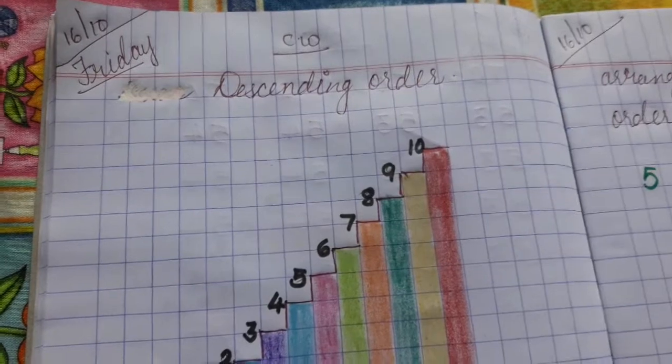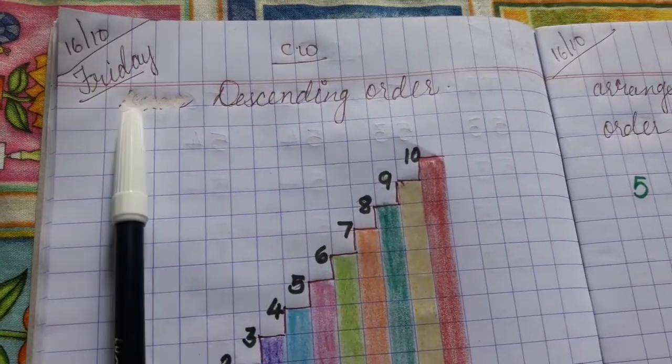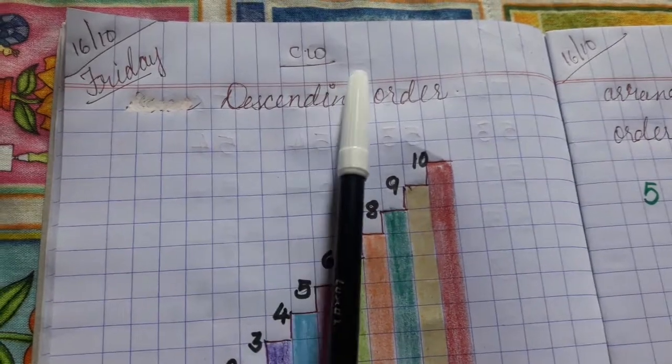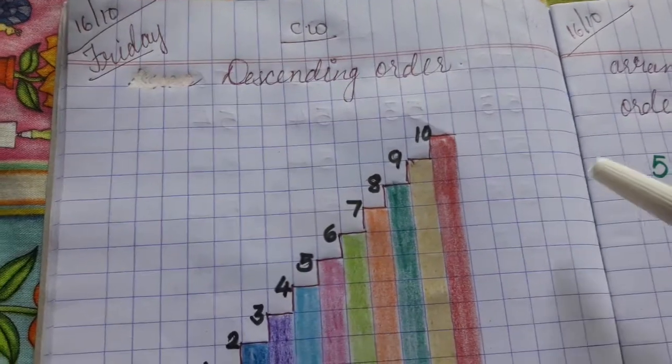Children, today's date is 16th October, day Friday, CW class UKJ. Children,